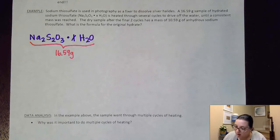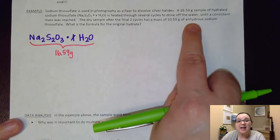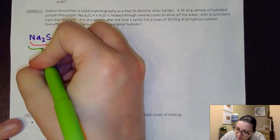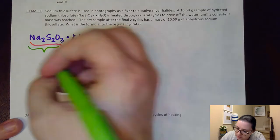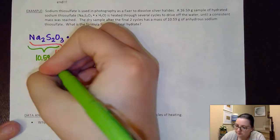So it says we want to reach a consistent mass that would ensure that as much water as possible had been evaporated off. So then it says the dry sample after the final two cycles has a mass of 10.59 grams of anhydrous, meaning without water, sodium thiosulfate. So this portion of my compound here is going to be 10.59 grams.